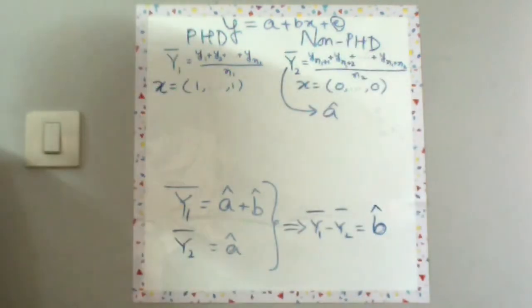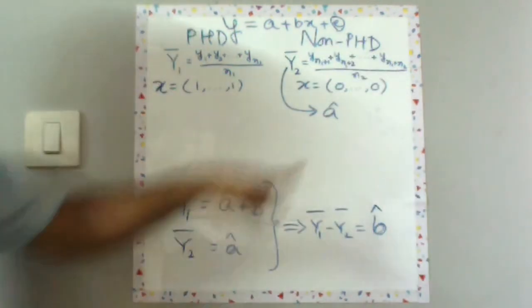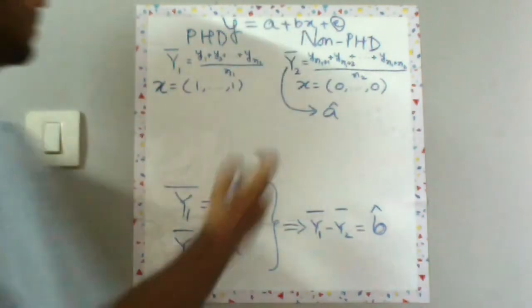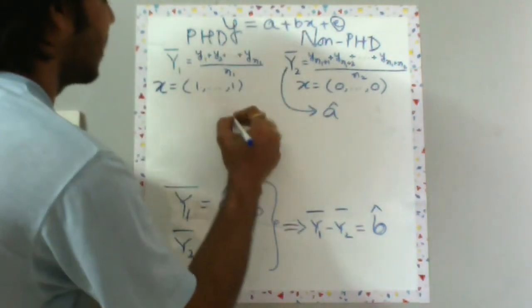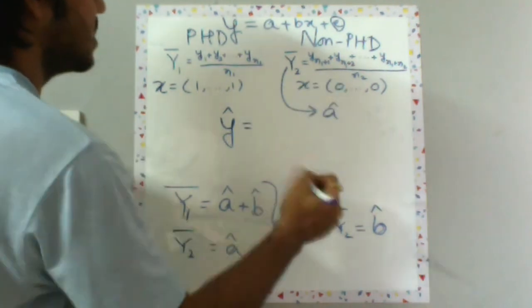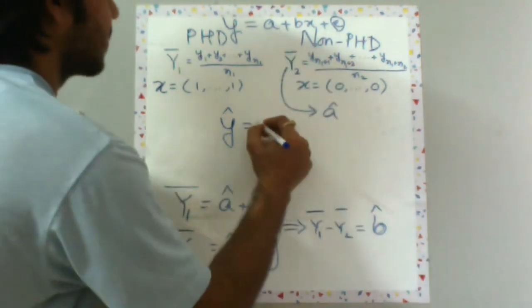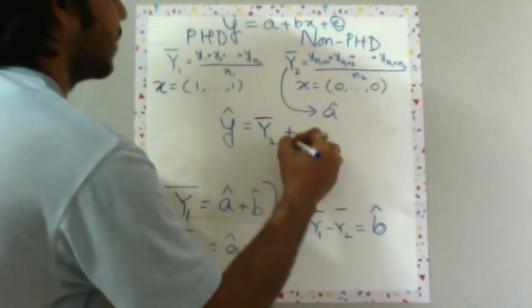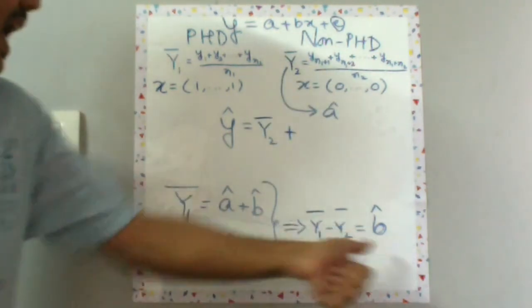So let's plug it in here. Y hat is equal to a hat, which is Y2 bar, capital Y2 bar, plus now b hat is Y1 bar minus Y2 bar into x.